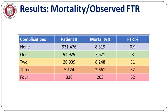Not surprisingly, as complications per patient increased, mortality went up quite dramatically. Patients who had no complications had lower than 1% mortality, but patients with one complication had 8% mortality, two complications more than three times that at 31% mortality, and patients who had all four complications had greater than 50% mortality.